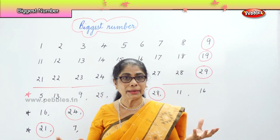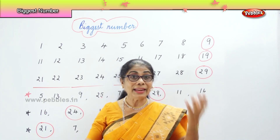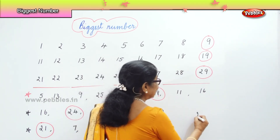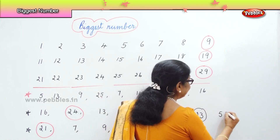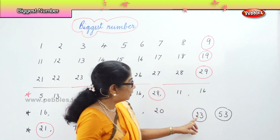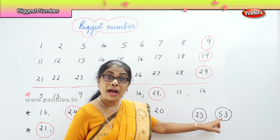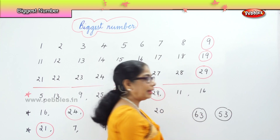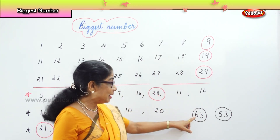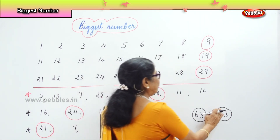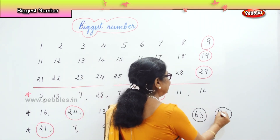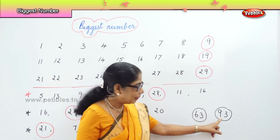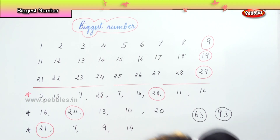Identify the bigger number: twenty-three and fifty-three. When I say twenty-three and fifty-three, you are looking at the first number — the first number is two, the first number is five, fifty. So fifty-three is the biggest number. Now if I say sixty-three and fifty-three, which is the biggest? The first number is six — sixty-three is bigger. And ninety-three versus sixty-three? The first number is nine — ninety-three is bigger.